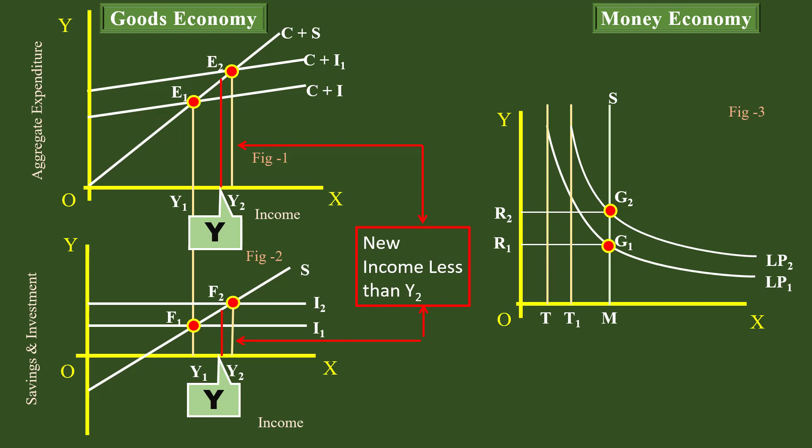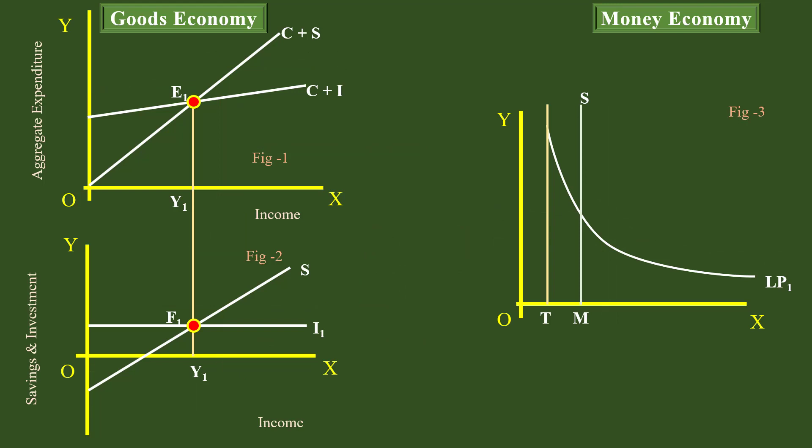You can find the same flaw in the theory of money and interest. Let us see that also. Look at Figure 3. To begin with, demand for money is equal to supply of money at G2. In other words, the demand curve of money LP1 cuts the supply curve of money MS at point G2. The equilibrium interest is R2.